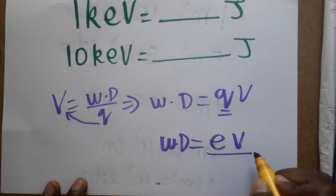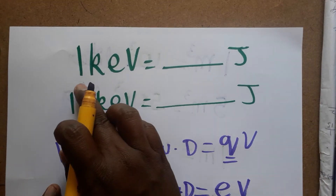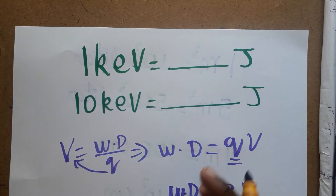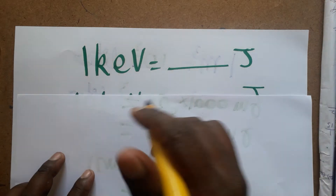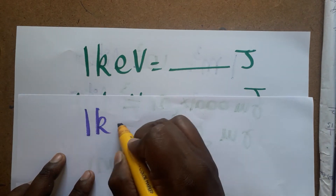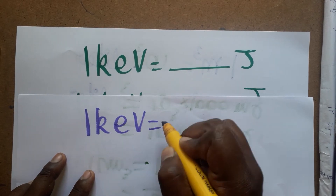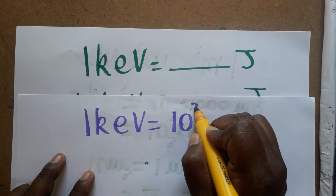Electron volt is energy, and the same way kilo electron volt is given. They are asking how many joules will be 1 kilo electron volt. Kilo is 10 to the power 3, so 1 kilo electron volt equals 10 to the power 3 electron volts.